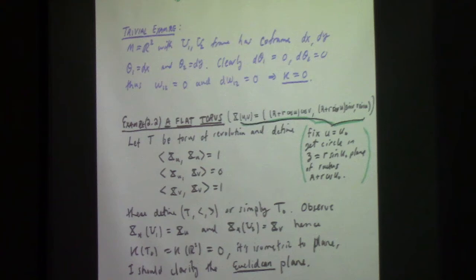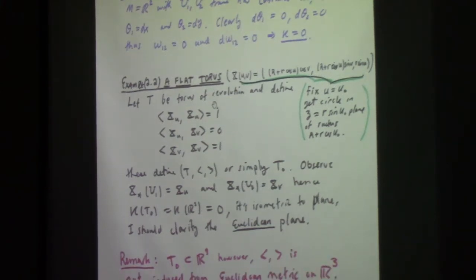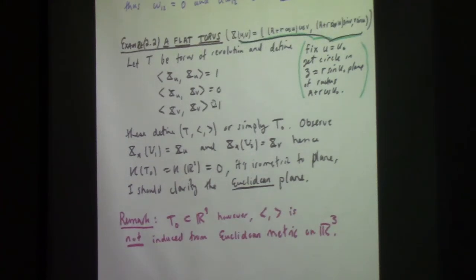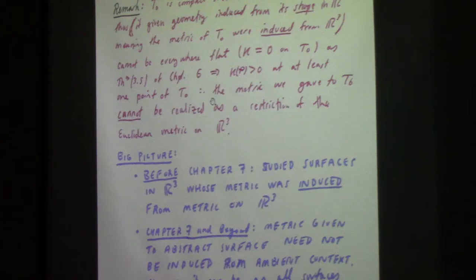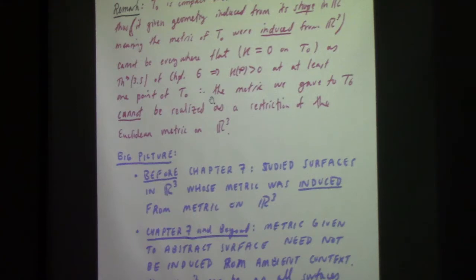That's weird, right? Because the torus in three dimensions is not flat — in terms of the natural geometry inherited from three dimensions, it's definitely not flat. The torus has positive curvature on the outside and negative curvature on the inside, in pre-chapter seven terminology. But that torus had geometry coming from the Euclidean geometry of R3 restricted to the torus. This metric we just made up defines a flat geometry on the torus. These abstract surfaces are divorcing the geometry of the surface from the geometry of R3 in which it's embedded.